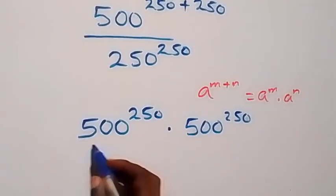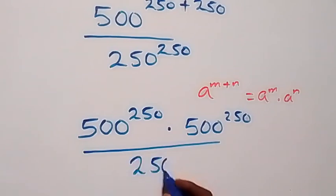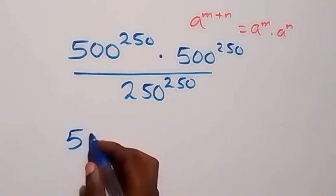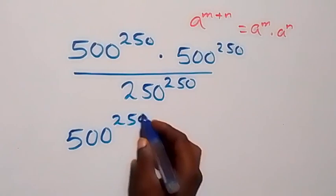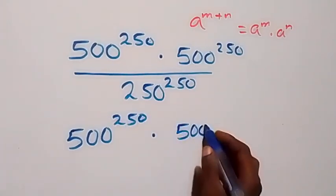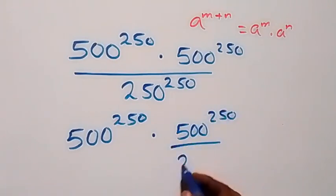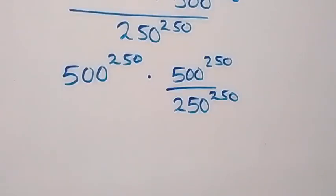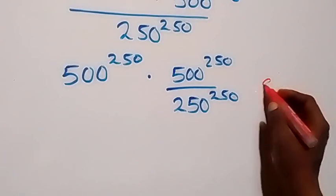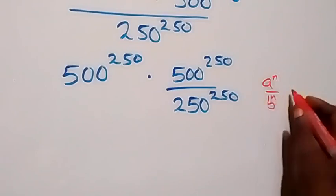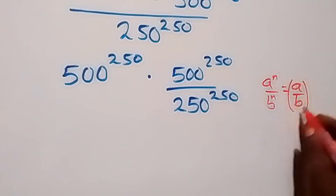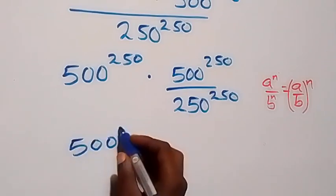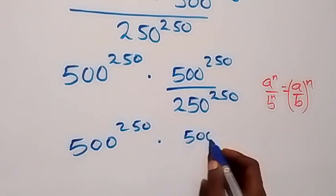So divided by 250 raised to power 250. From here, one of the 500 raised to power 250 terms cancels with the denominator, leaving 500 raised to power 250 times, and then from the law of indices — a raised to power n over b raised to power n equals a over b raised to power n — we can write this as 500 raised to power 250, times 500 over 250 raised to power 250.